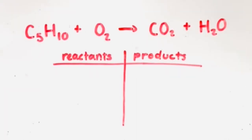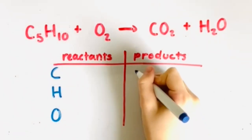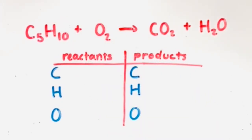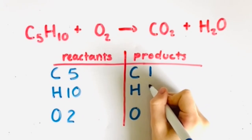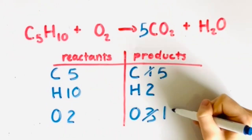What happens in a more complicated reaction with larger coefficients? Let's use a combustion reaction. Let's balance C5H10 + O2 yields CO2 + H2O. Both sides contain carbon atoms, hydrogen atoms, and oxygen atoms. First, list out how many of each atom are on each side. Since there are five carbon atoms on the reactant side, we will put a five in front of CO2. This changes the amount of carbon atoms to five and oxygen atoms to 10, which creates 11 oxygen atoms total on the product side.